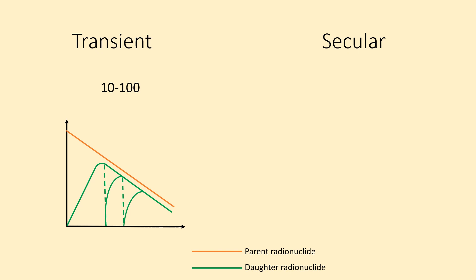Secular equilibrium occurs when the parent half-life is more than 100 times that of the daughter half-life, resulting in negligible decay of the parent radionuclide.